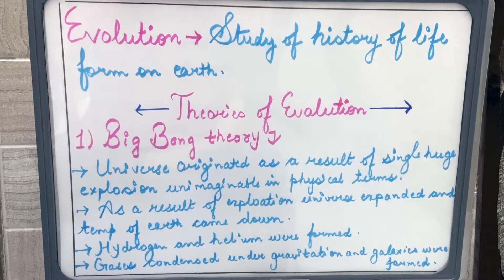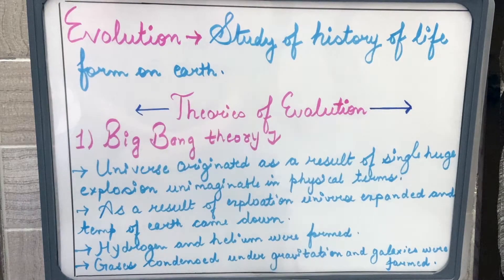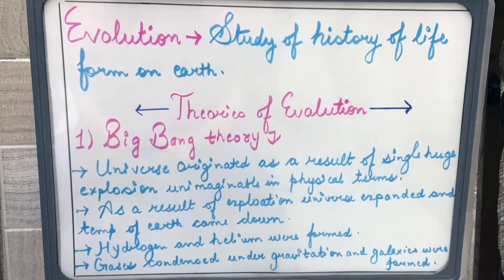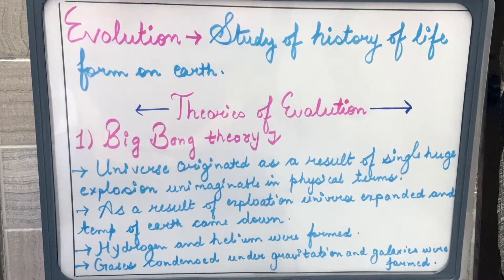The first theory is Big Bang Theory. This theory states that the universe was created as a result of a single huge explosion, so big it was unimaginable in physical terms. As a result of this explosion, the universe expanded and the temperature came down. Hydrogen and helium were formed, and these gases condensed under gravitational force to form galaxies. This is how the earth was formed according to Big Bang Theory.